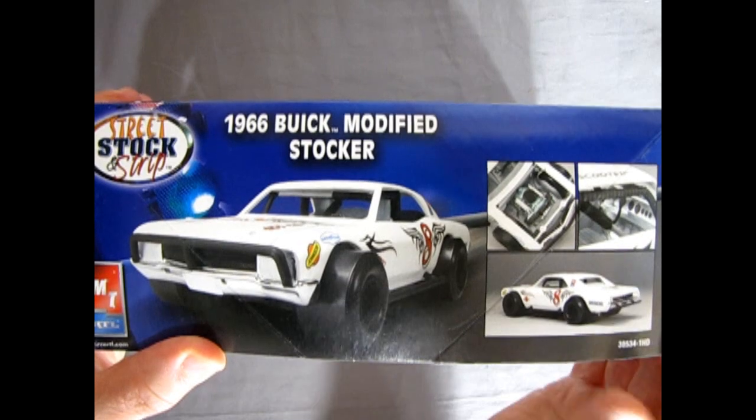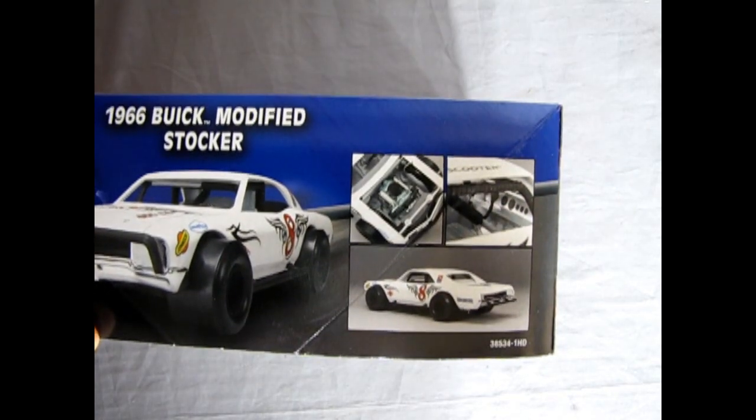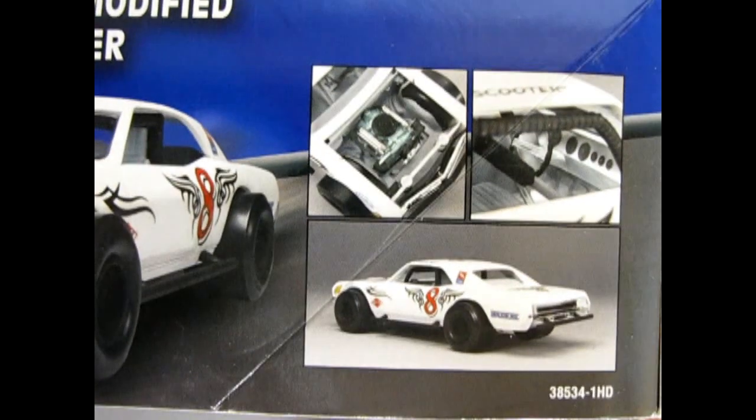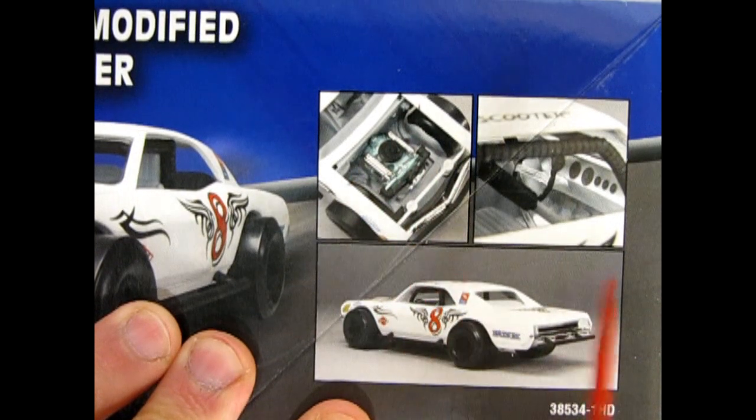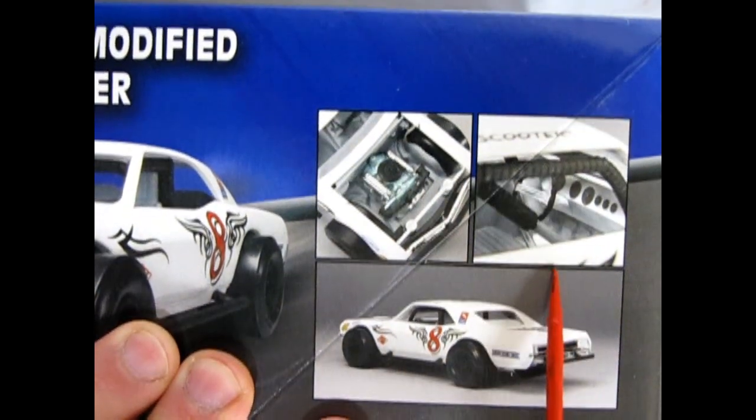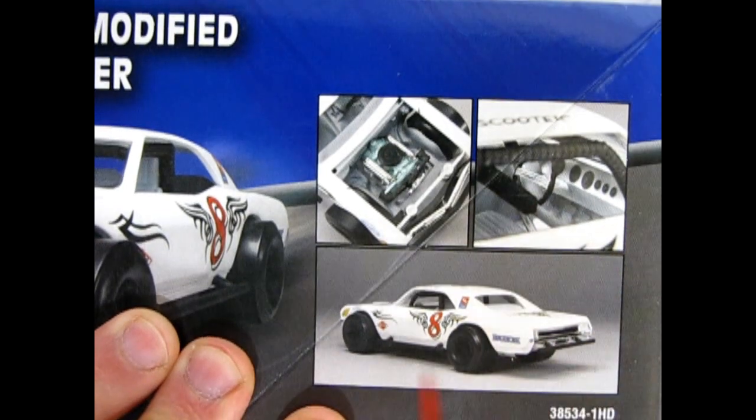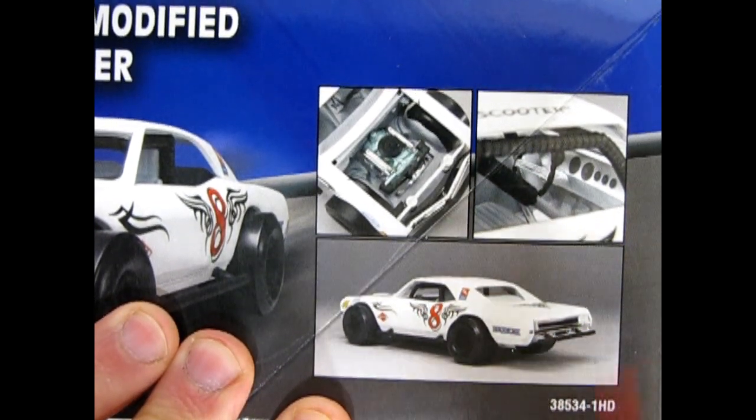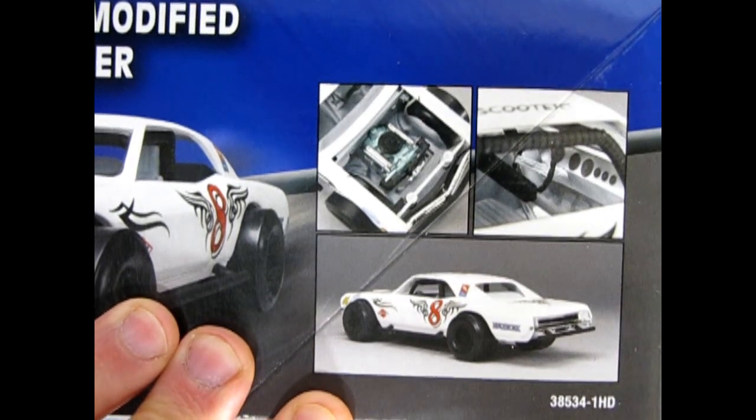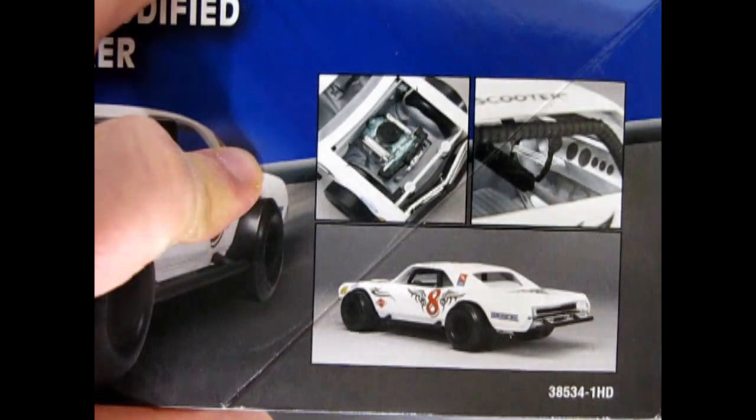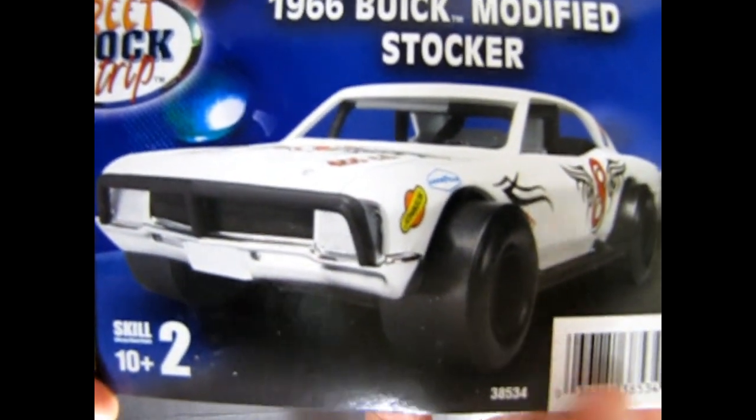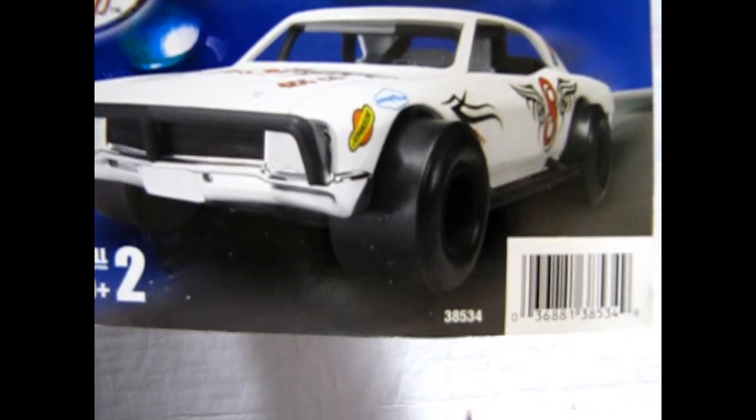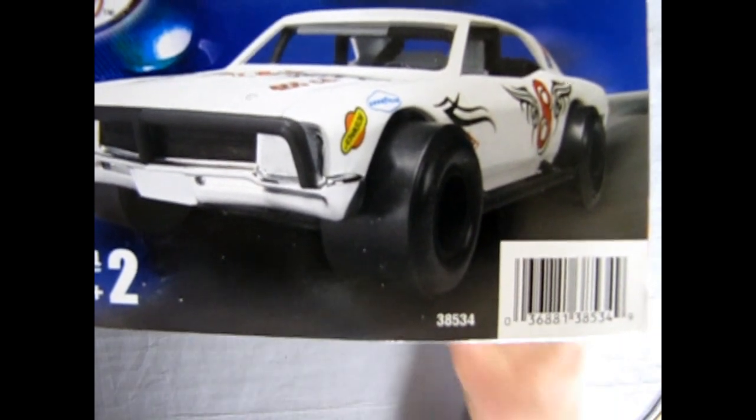So anyway, we turn the box over to this side and again we can see some great pictures of the model kit. This of course is the cover picture and then in this panel here, you can see we have the engine bay and our interior through the passenger side window or the driver side maybe. And then we have our rear three-quarter shot of the car with the 8 for of course our Buick V8. Now let's back this back out again so that I can turn the box up this way.